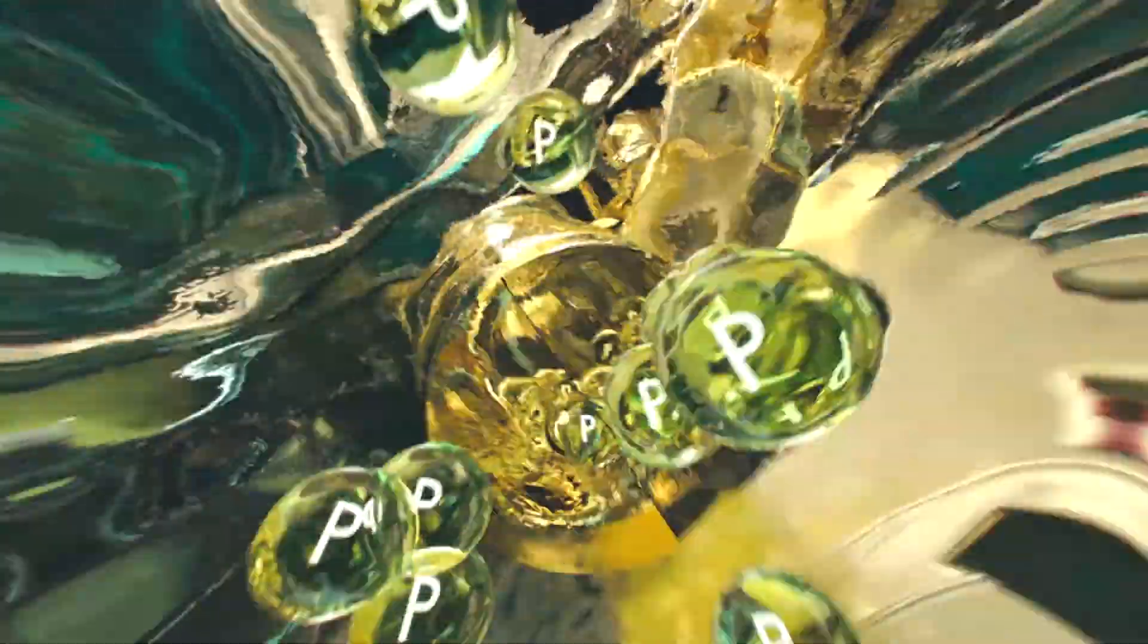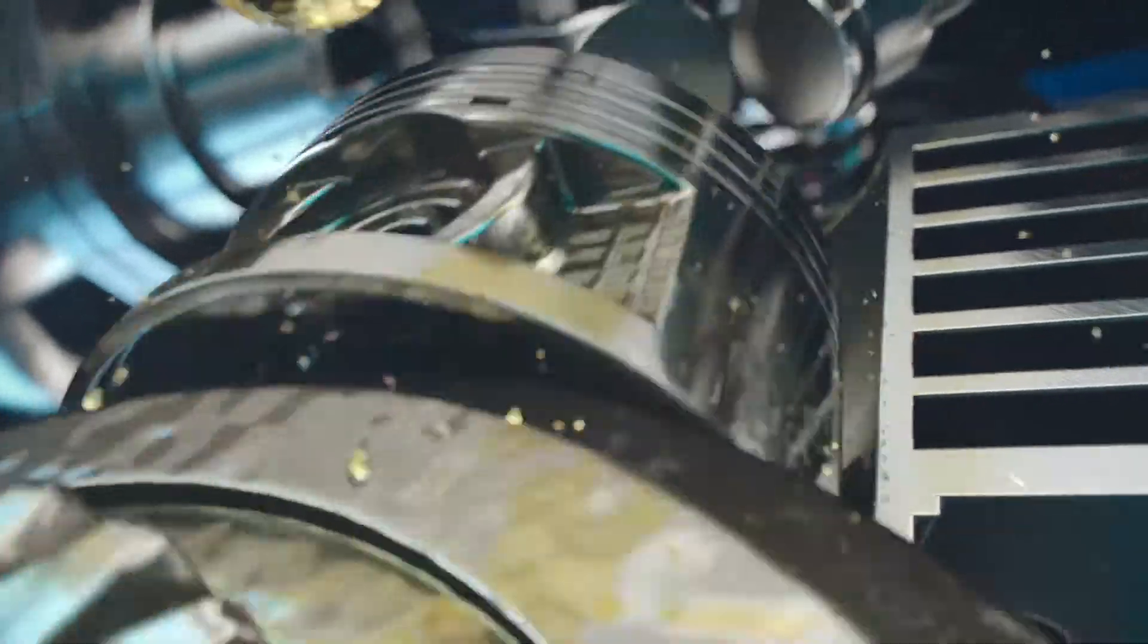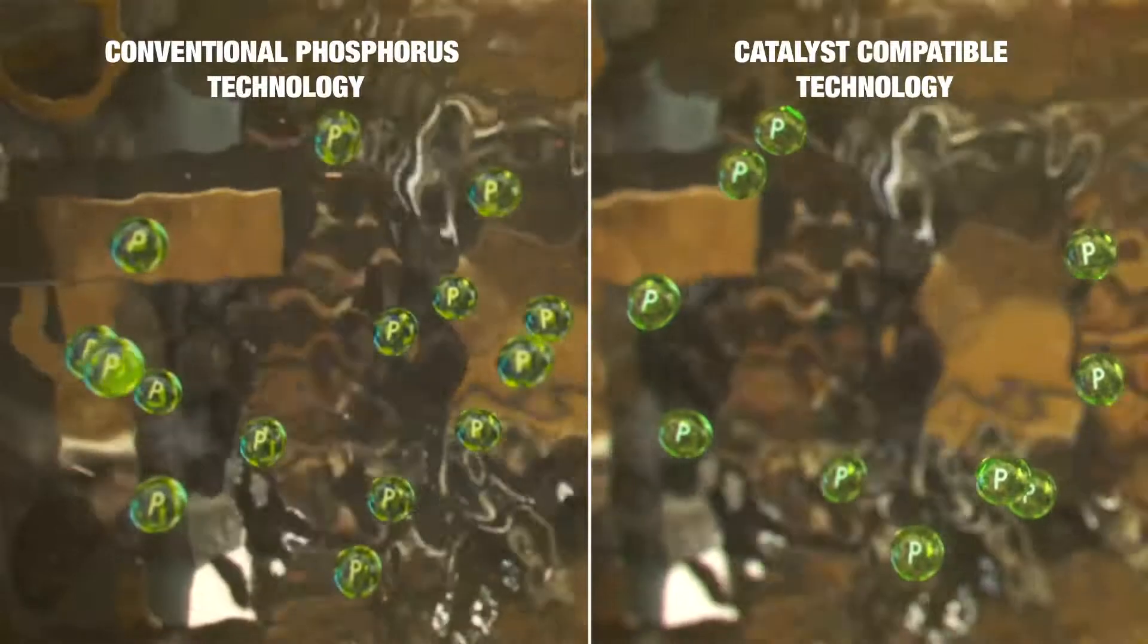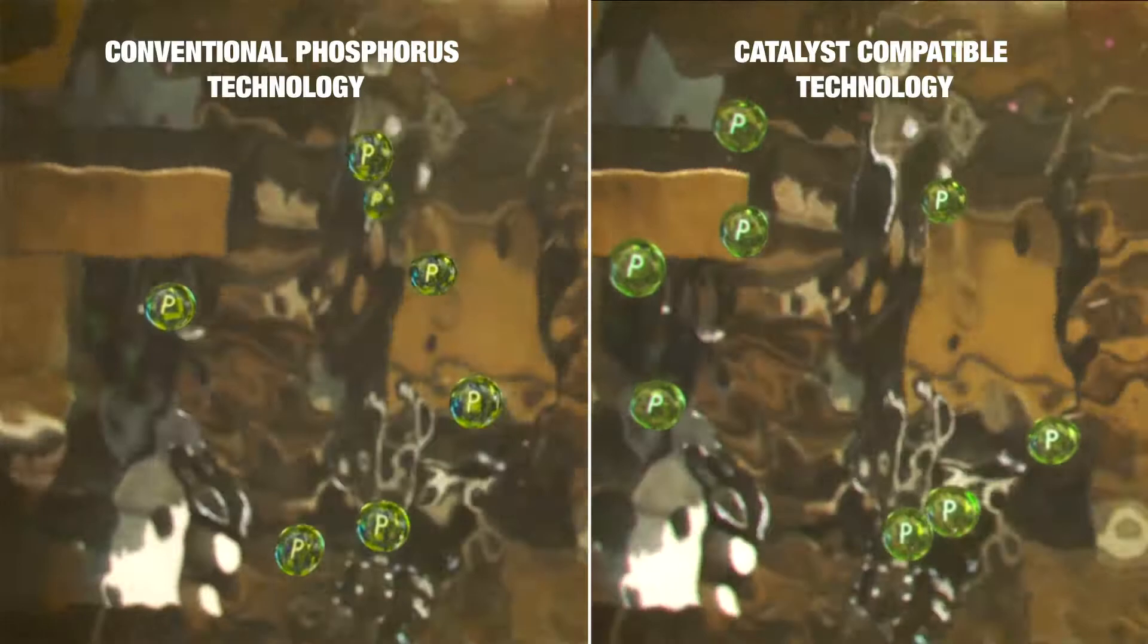Additionally, phosphorus volatility is found to be higher in motorcycles due to operating conditions. This means oils with lower phosphorus content, along with minimized volatility of phosphorus, are needed for optimal catalyst durability.